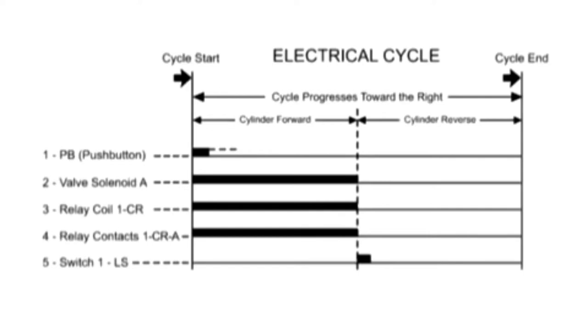The start of a typical cycle is annotated at the left vertical line marked Cycle Start. The action progresses toward the right until the end of a cycle at the vertical line marked Cycle End.